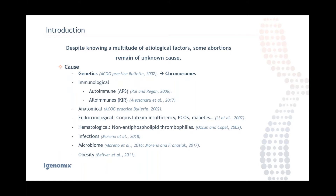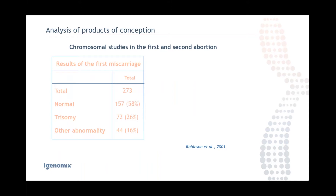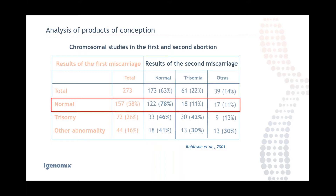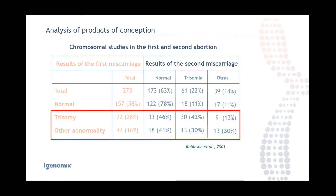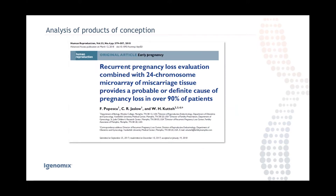I'm going to focus on the genetics part, which is our area of expertise. In a study by Robinson and Coles, they analyzed the first miscarriage and, if that patient had another miscarriage, they analyzed the products of conception as well. They found that around 60% of patients had an abnormal chromosomal analysis. If the same patient had another miscarriage, there was a 20% higher chance of the second miscarriage also being chromosomally abnormal — from 58% to 78%. Similarly, patients with a trisomy had 20% more chances of having a second miscarriage with a chromosomal abnormality.